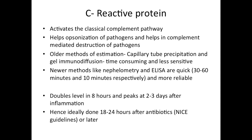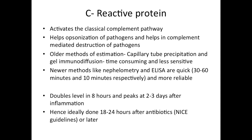If you do the CRP early in the course of illness, you might get a normal CRP level. The sensitivity varies from 50–90% and specificity is around 85–90%. Serial CRPs — two or three measurements at a gap of 12–24 hours — have a good negative predictive value, as high as 99%. So if you get normal CRP values serially, you can reasonably exclude sepsis.